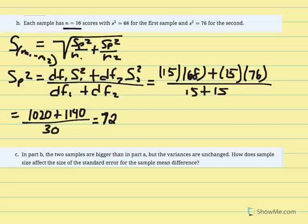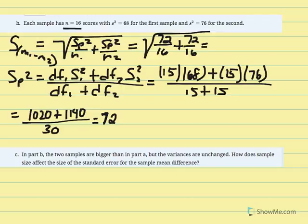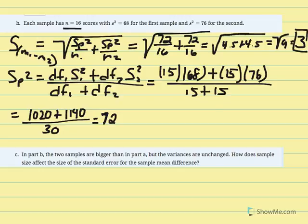Now calculating the estimated standard error of the mean difference: pooled variance 72 over N1 (16) plus 72 over N2 (16). Taking as separate fractions: 72 divided by 16 equals 4.5, so 4.5 plus 4.5 equals 9. The square root of 9 is 3. The estimated standard error of the mean difference given sample size 16 is now equal to 3.